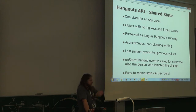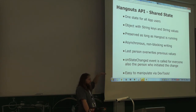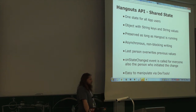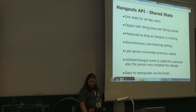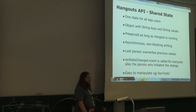Another problem with the shared state is that you don't see who changed it. You can see when it was changed but you don't get the user who last changed the state, which makes it easy to manipulate. With the onStateChanged event you get information about which keys were added or removed, the full state, and you can get or set individual values or clear them.